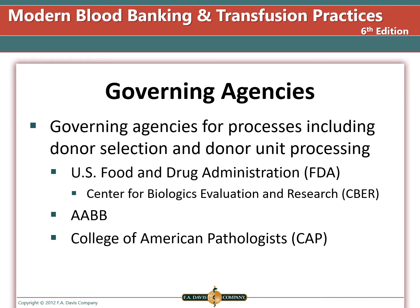The governing agencies for blood donor centers include the Center for Biologics Evaluation and Research, or CBER, under the Food and Drug Administration, or FDA. The regulations from the government agency are legally required. The AABB and CAP are accrediting agencies that have deemed status. This means that the Center for Medicare and Medicaid Services, or CMS, has given them the authority to inspect instead of having a CMS inspection.